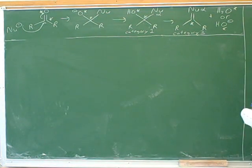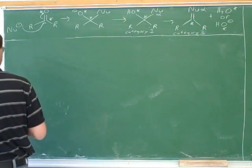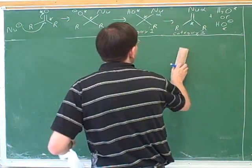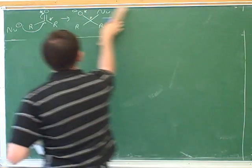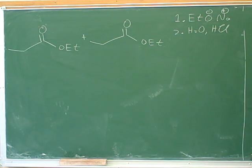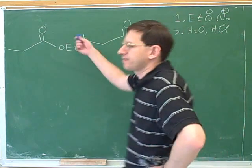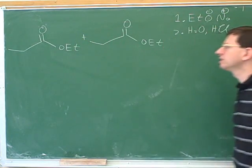Another really important topic in this chapter is the Claisen condensation, so let's move on to that. The aldol condensation is when one aldehyde or ketone attacks another aldehyde or ketone. The Claisen condensation is when an ester attacks another ester. So you can see that's what we have here — one ester attacking another ester.